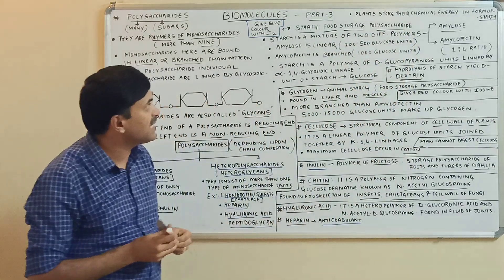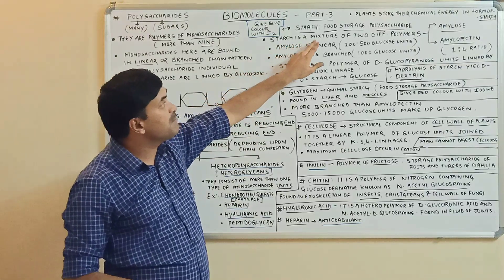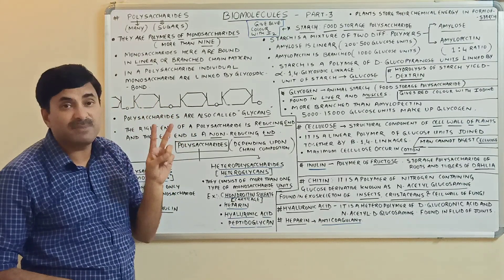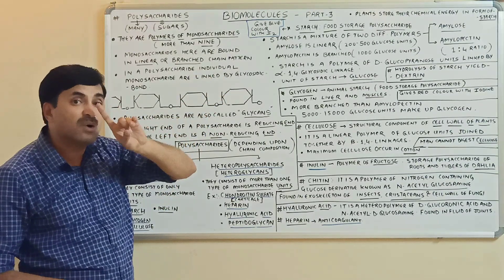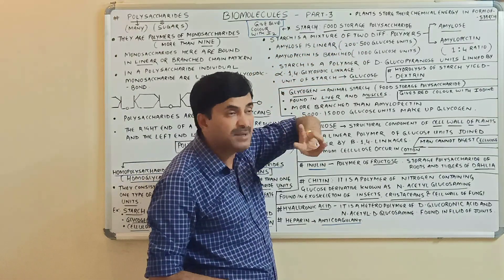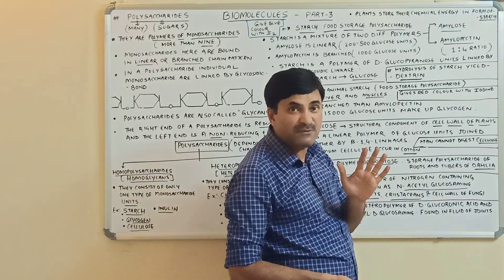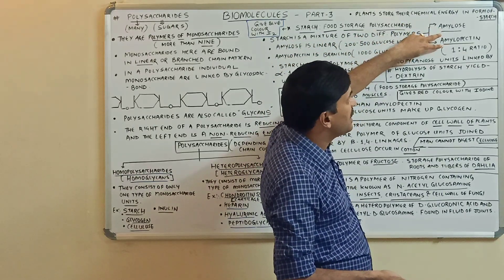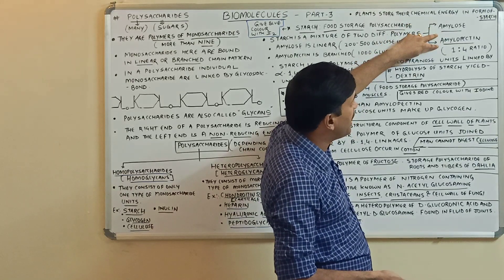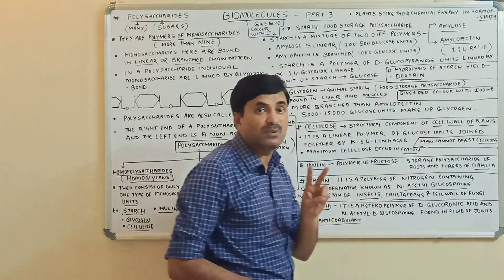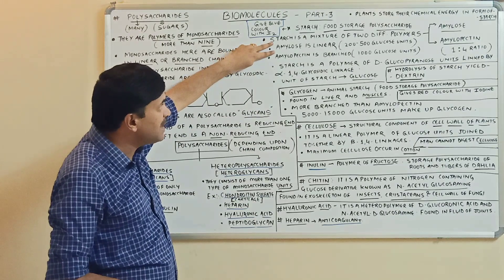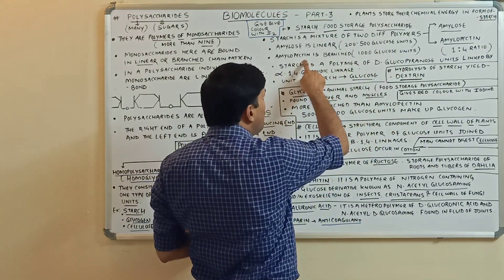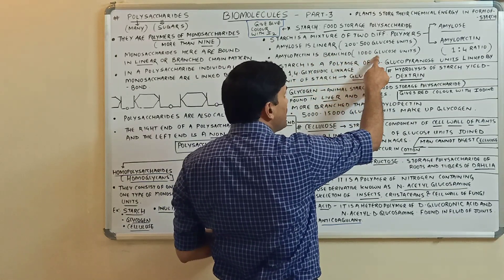Starch is a mixture of two different polymers — but don't be confused, it is still a homopolysaccharide. One form is amylose and the other is amylopectin, found in a 1:4 ratio. Amylose is linear and consists of 200 to 500 glucose units. Amylopectin is branched and is made up of about 1000 glucose units.